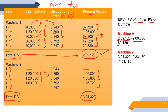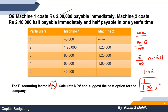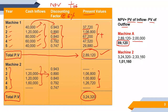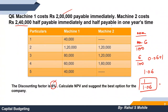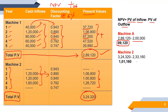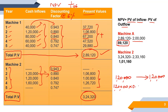For Machine 2, the present value of inflows is 3,24,320. But Machine 2's cost of 2,40,000 has an adjustment: half, i.e. 1,20,000, is payable immediately, and the remaining 1,20,000 is payable after one year. So the deferred 1,20,000 must be discounted. Since it is payable after one year, multiply by the year-1 discounting factor of 0.943, giving 1,13,160. Adding both: 1,20,000 plus 1,13,160 equals 2,33,160, which is the present value of outflow for Machine 2.